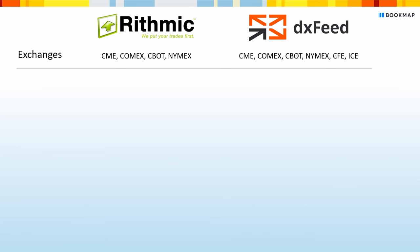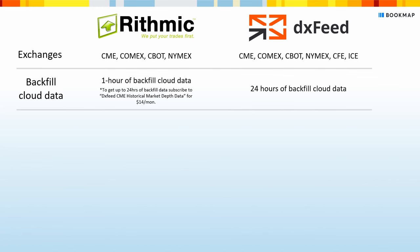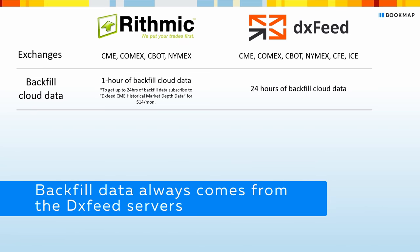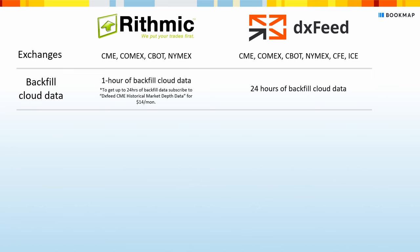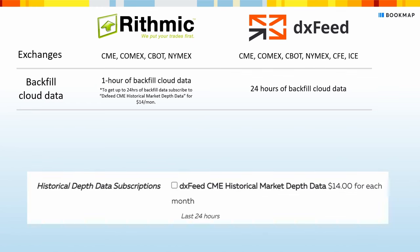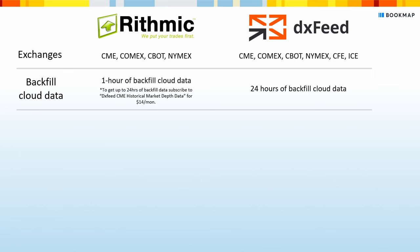For the second category, we'll cover the backfill cloud data. This is the amount of cloud historical data you can load into Bookmap right after subscribing to an instrument. Note that the backfill data always comes from the DXFeed servers, regardless of whether you use other data feeds like Rithmic or CQG. Rithmic provides one hour of backfill cloud data. If you want more, you can get up to 24 hours by subscribing to the DXFeed CME historical market depth data subscription for $14 per month. All DXFeed futures subscriptions offer up to 24 hours of backfill cloud data.